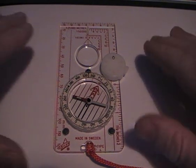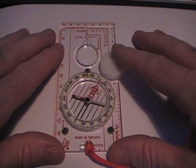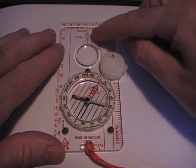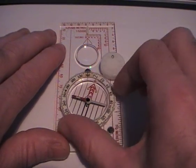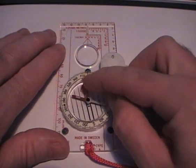To take a compass bearing is very simple. All you need to do is get your compass, point the direction of travel arrow at the landmark feature, and then turn the compass housing until the orienteering arrow